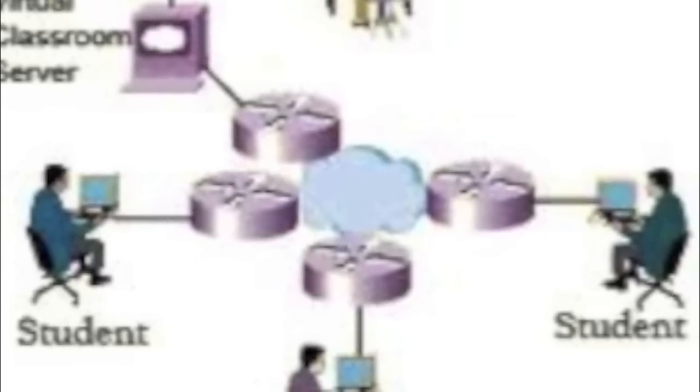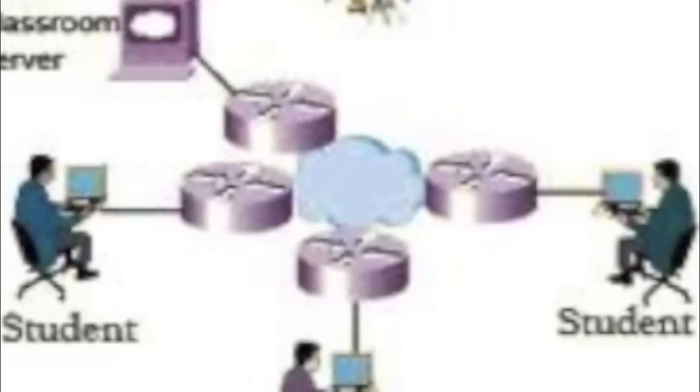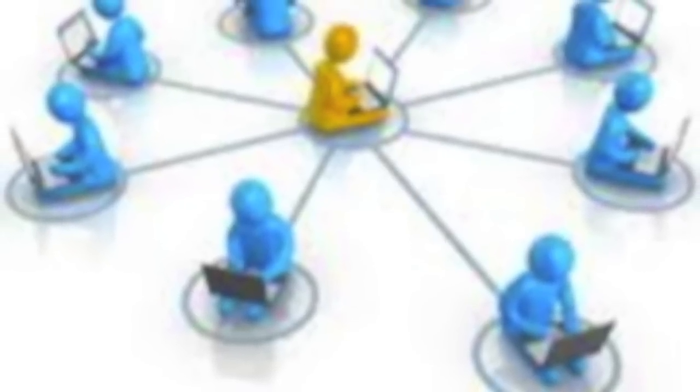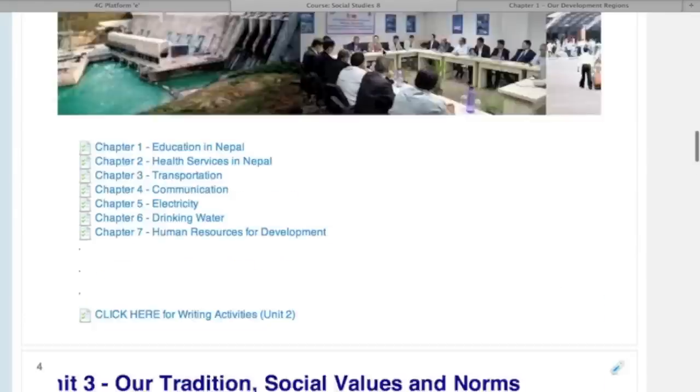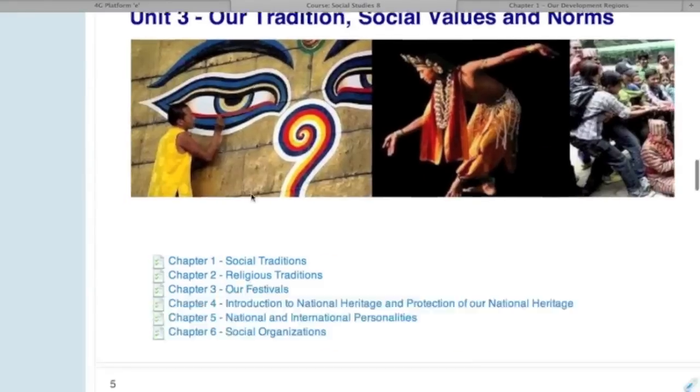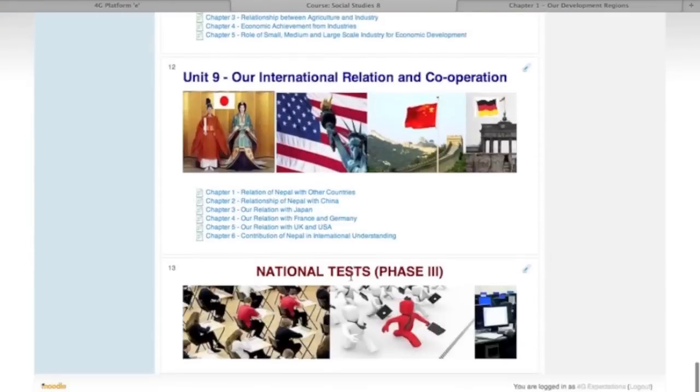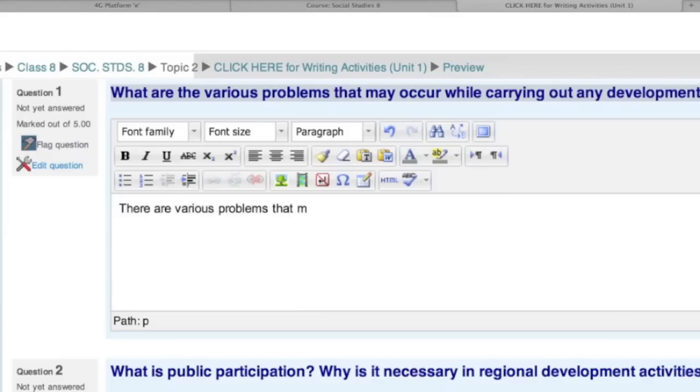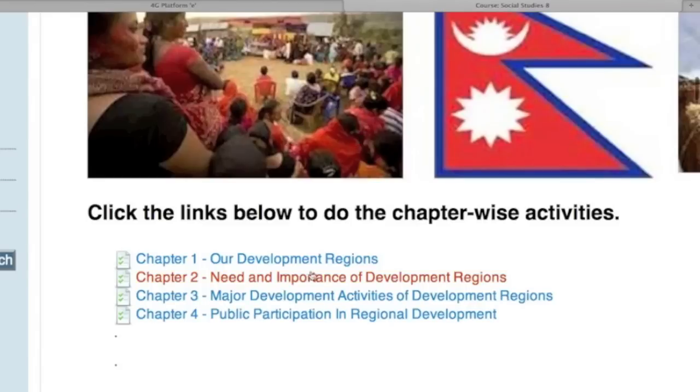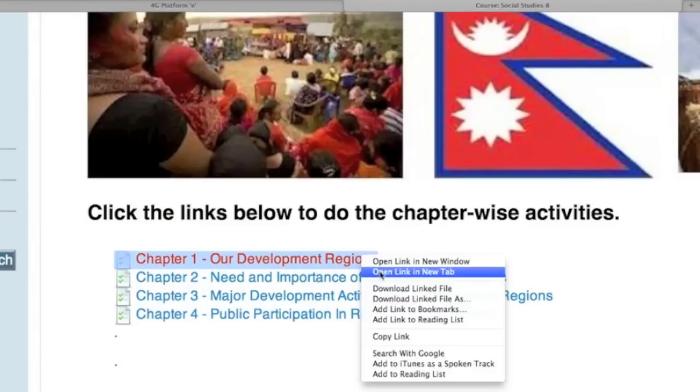Secondly, now here, how the students do the homework activities. I'm showing you here Class A social studies activities as an example. You can see here, these units are based on national syllabus, and the students can do all the activities here as they do in their exercise books and notebooks in the schools. Let me show you one of the chapter activities.